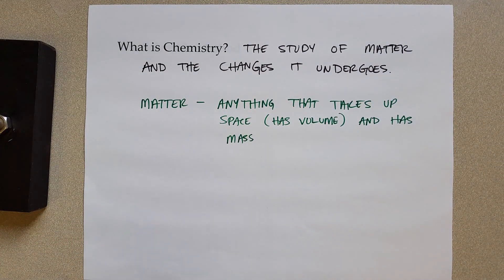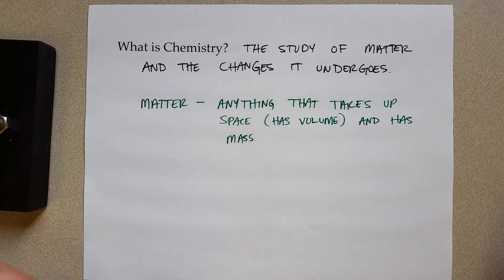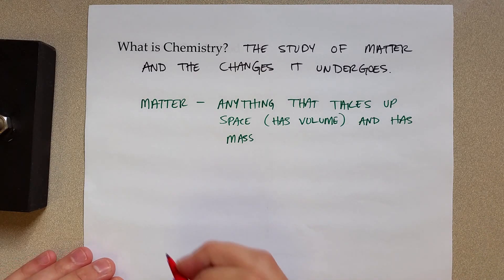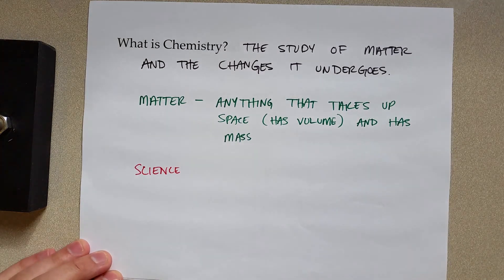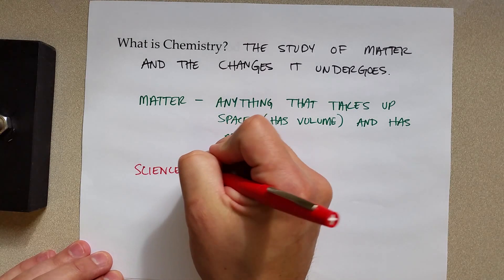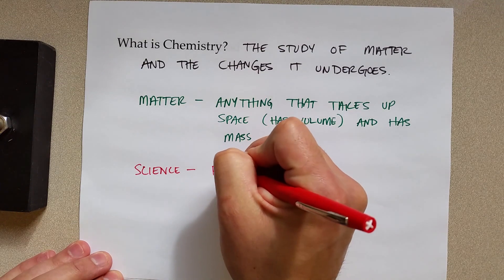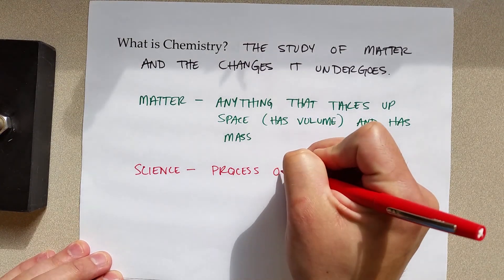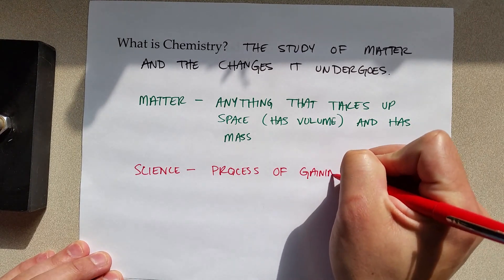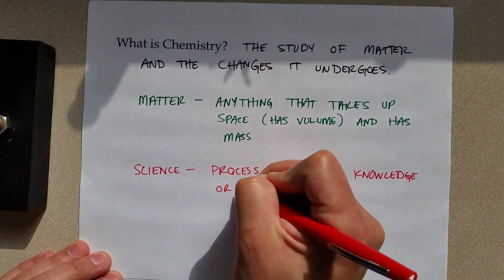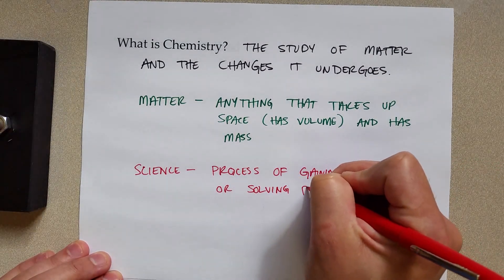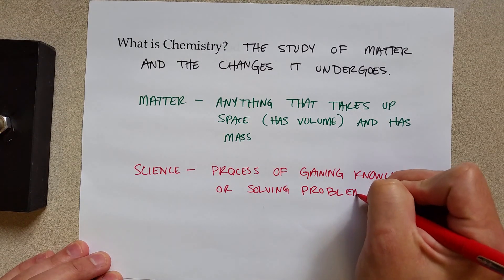Matter can come in a variety of forms. We'll talk about that a lot in chemistry, so we'll focus on that a little bit later. In the meantime, chemistry is a science, and so it would be important to first start talking about science itself. The way I like to think about science is that science is a process of gaining knowledge or solving problems using something called the scientific method.